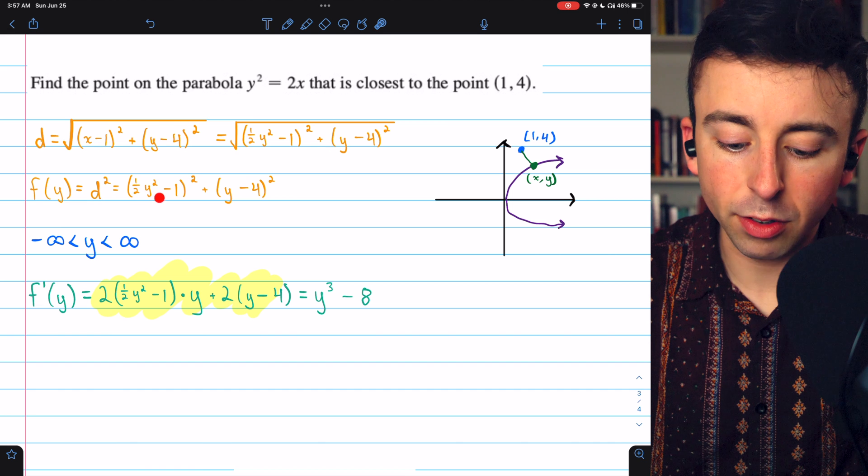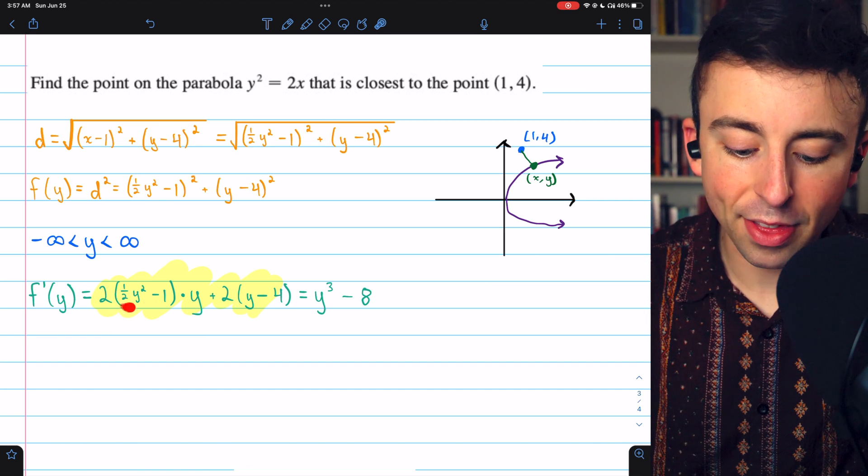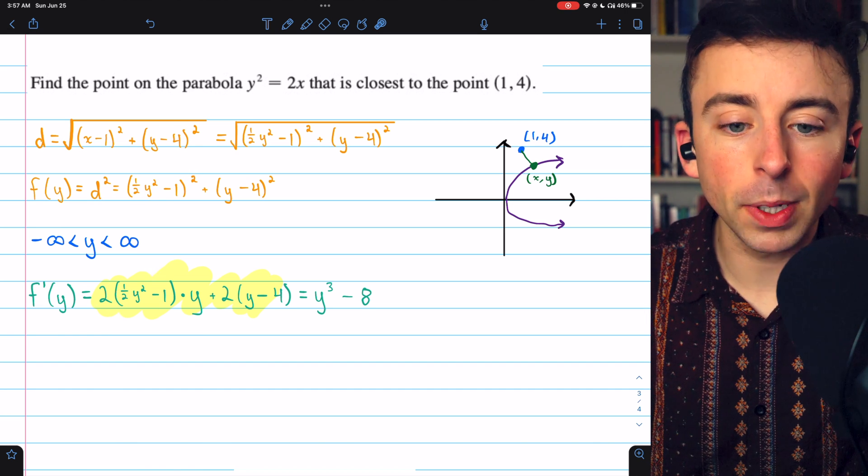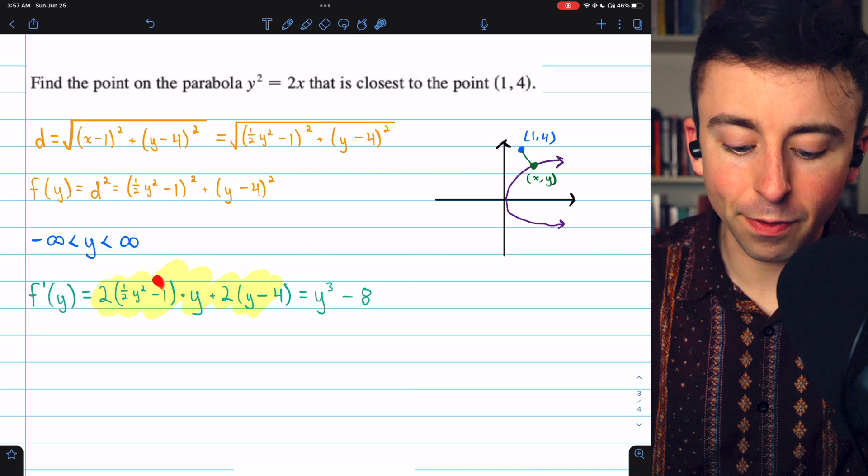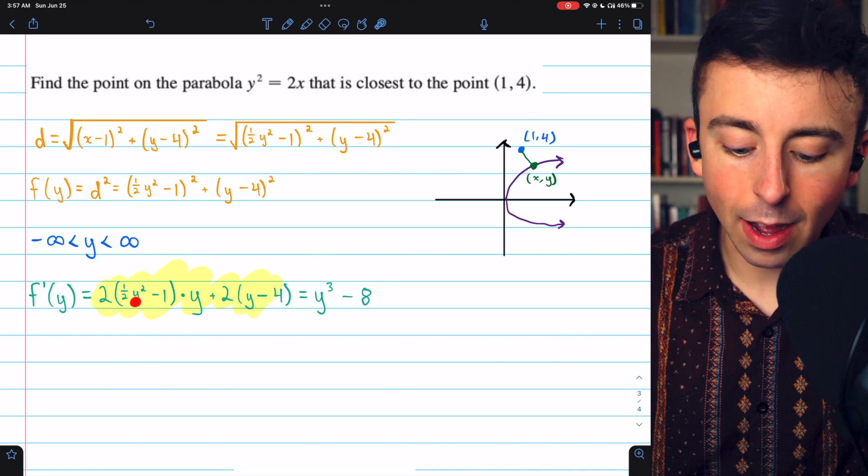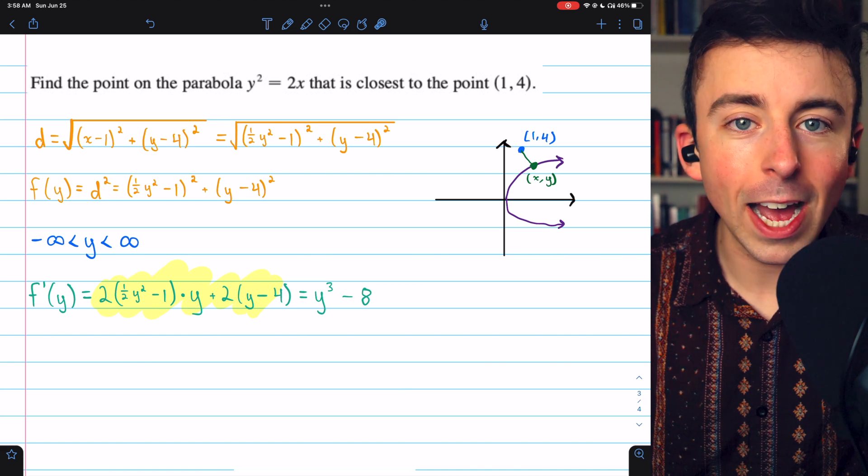The derivative of a thing squared is just 2 times that thing, but then we need to multiply by the derivative of the inside function. The derivative of one half y squared is just y.